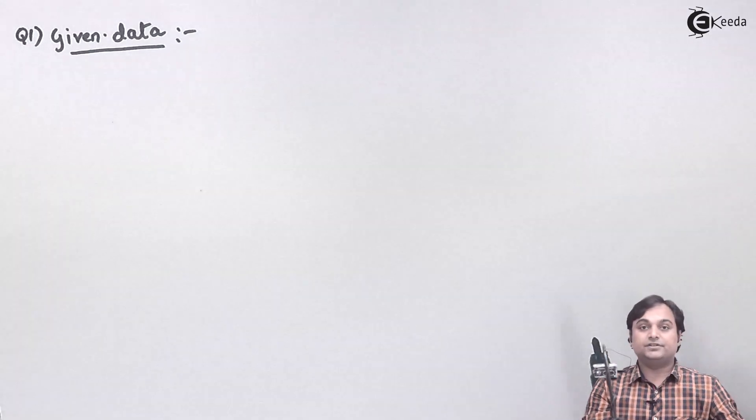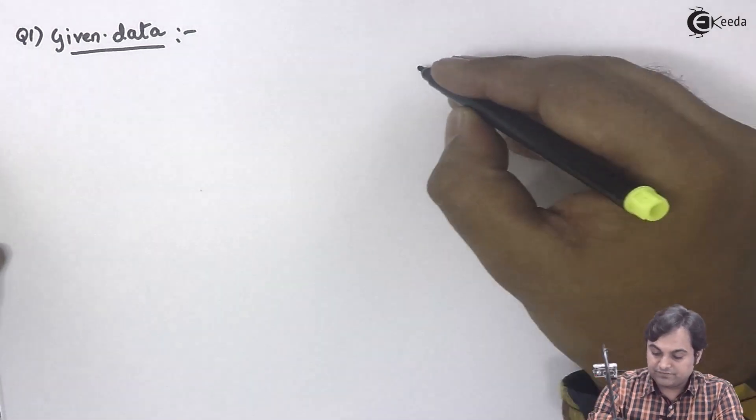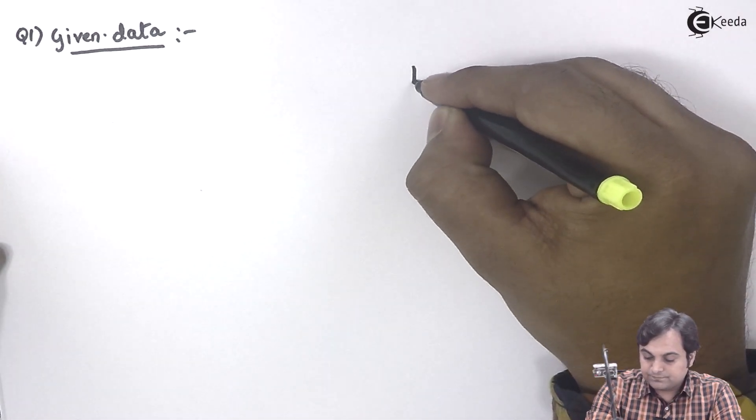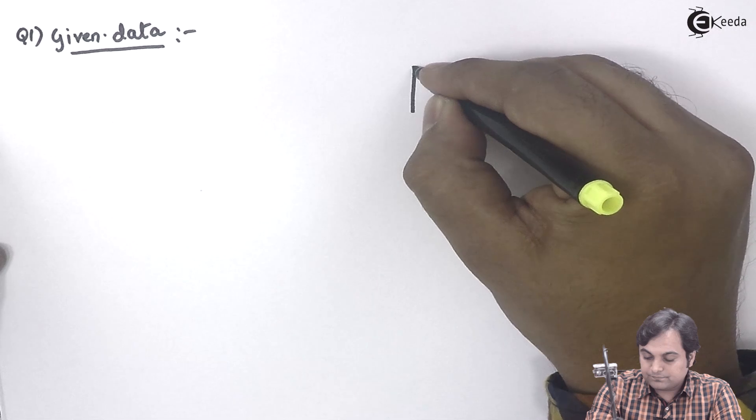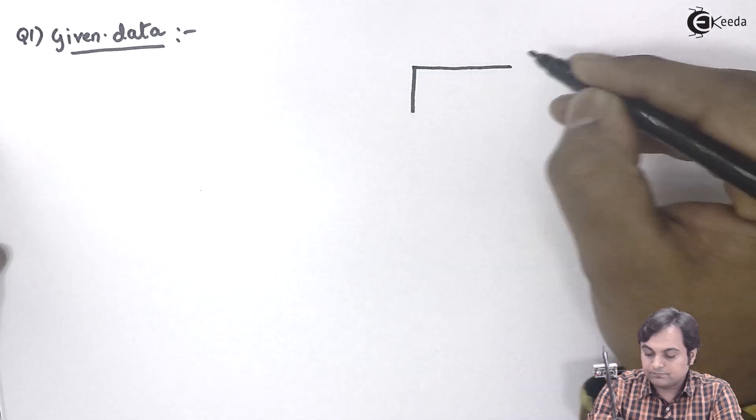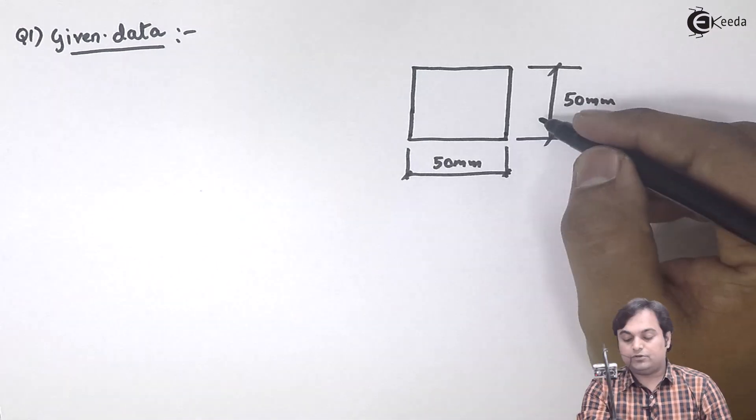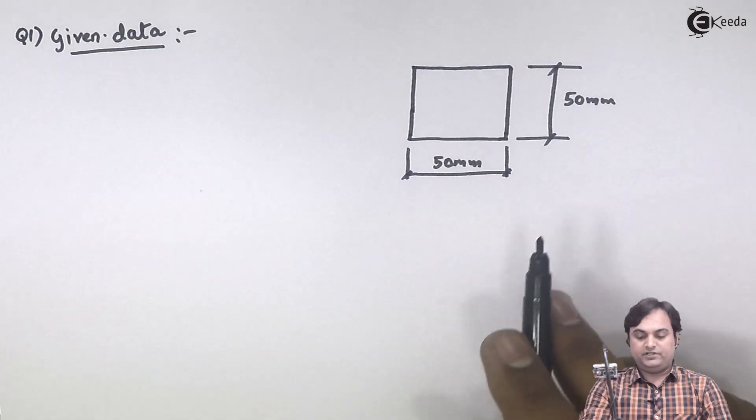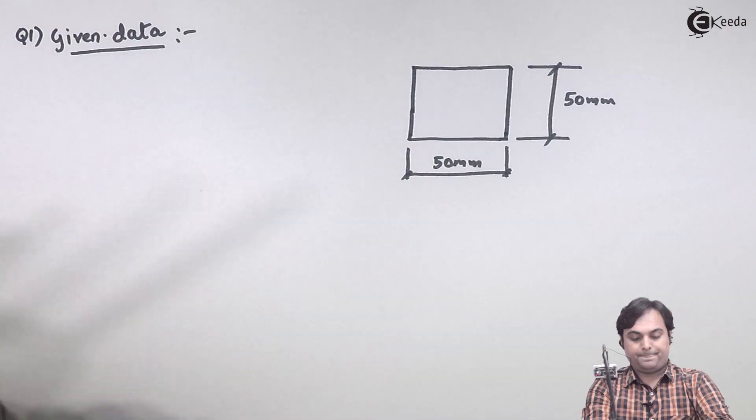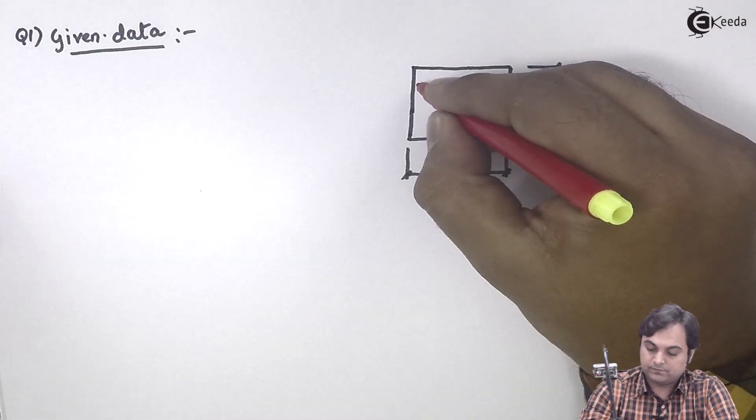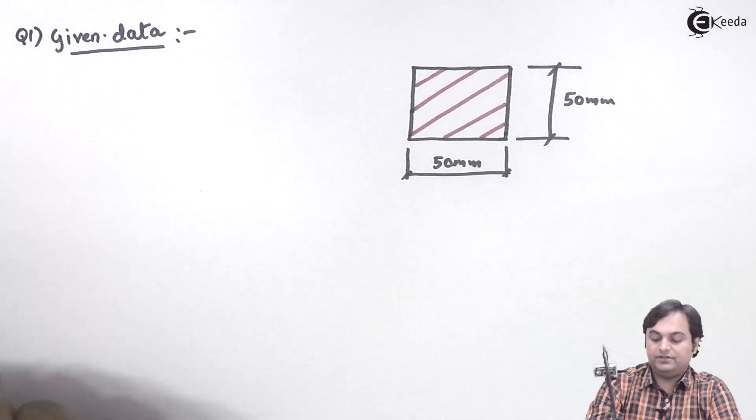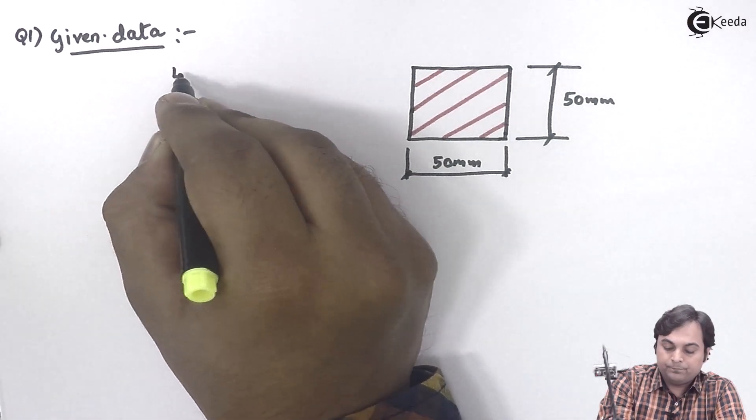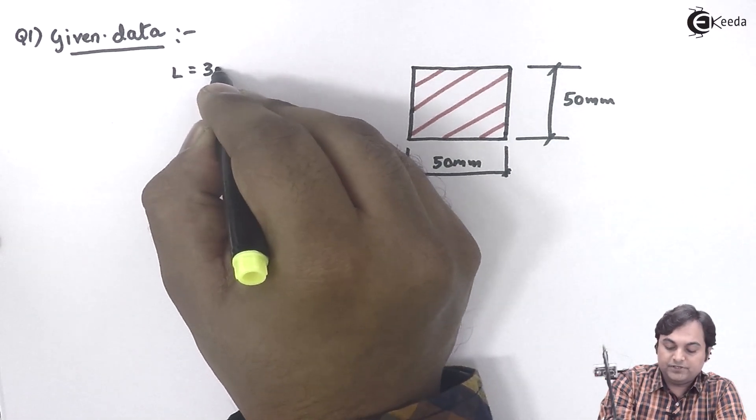And 3 meters is the length, so I'll draw the cross section first. Here the cross section is a square, as we can see, 50 mm into 50 mm, and the length of this bar is equal to 3 meters, which is given, so it will be 3000 mm.